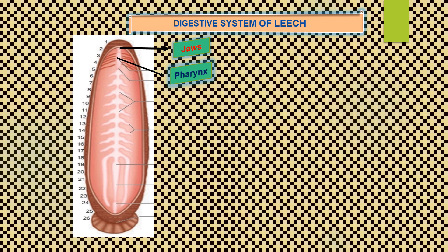The pharynx leads into the crop through a short narrow esophagus. The crop is the largest portion of the alimentary canal. It is divided into ten series of chambers. The chambers communicate with one another through circular apertures surrounded by sphincters. A pair of lateral, backwardly directed blind outgrowths called caeca arise from each chamber. The crop is diverticular.